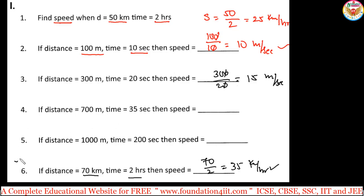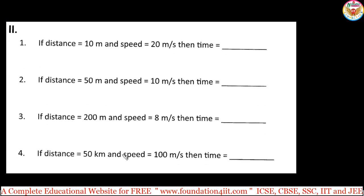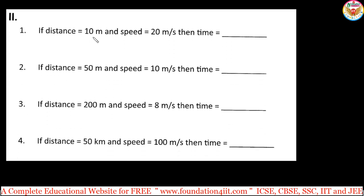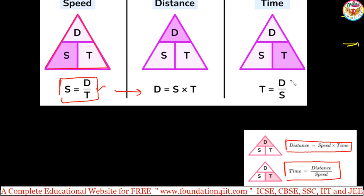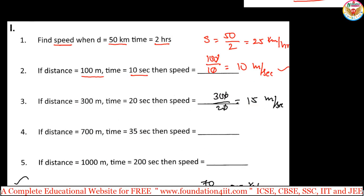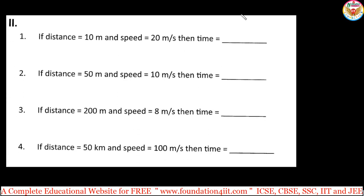Now, another type: distance and speed are given, find the time. The formula is time equals distance divided by speed. For example, if distance is 10 meters and speed is 10 meters per second, the units of distance and speed must match so that time comes out in seconds. So time equals 10 divided by 10, which is 1 second.